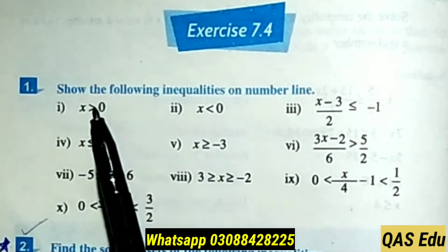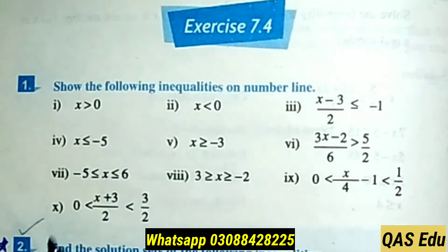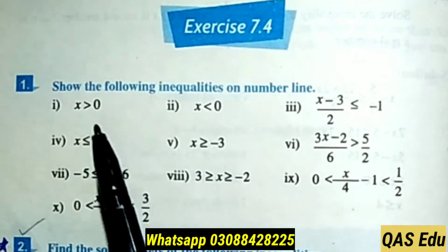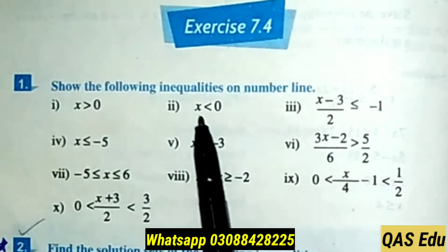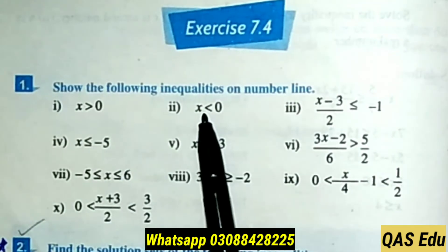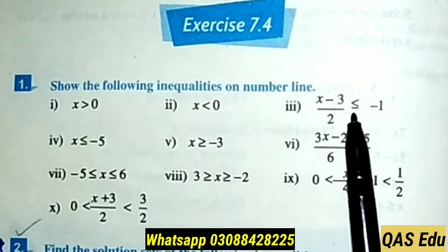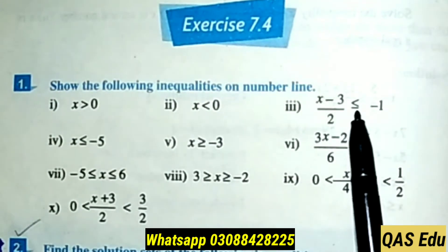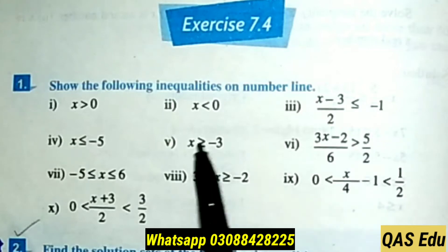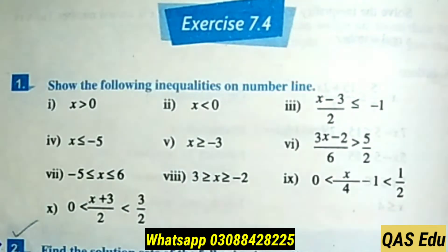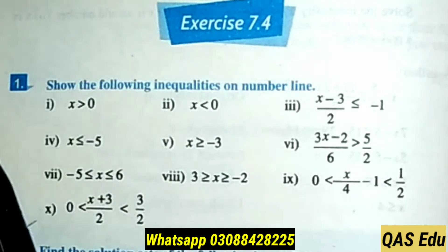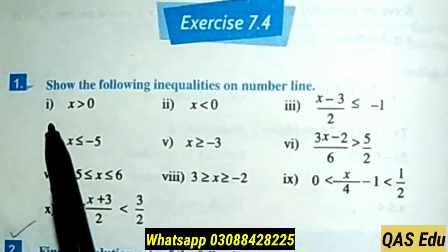Inequalities involve four types of comparison symbols: greater than, less than, less than or equal to, or greater than or equal to. These symbols are used in inequalities, meaning they are not equal.